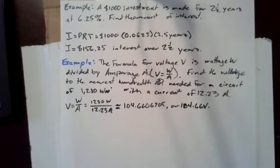So for example, a $1,000 investment is made for two and a half years at 6.25%. Find the amount of interest. In this case, we're looking for the interest.